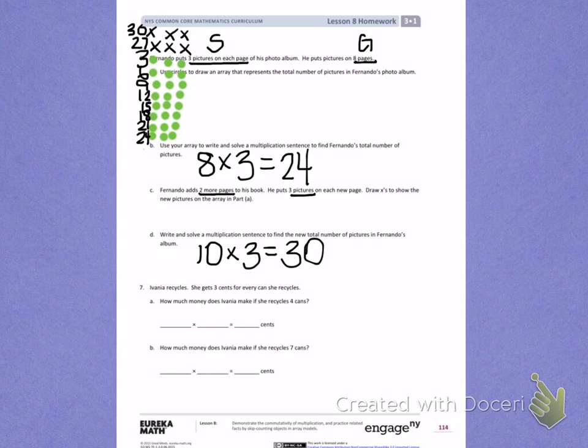How much money does Aviana make if she recycles four cans? Well, if she recycles four cans, and she gets three cents for each can, I'm going to draw a picture by drawing dots in an array. First four cans, she gets three cents for each can.